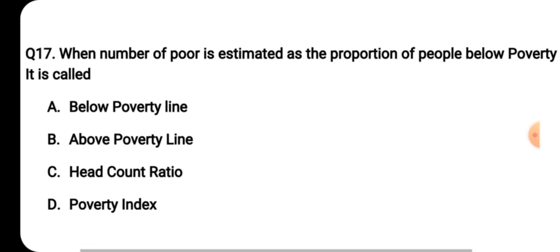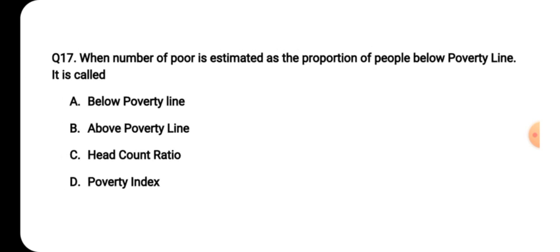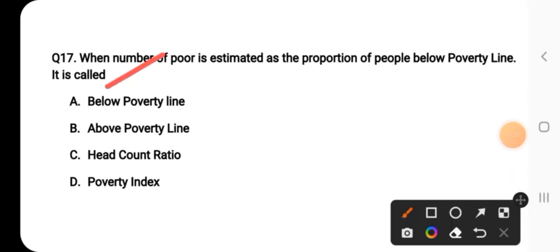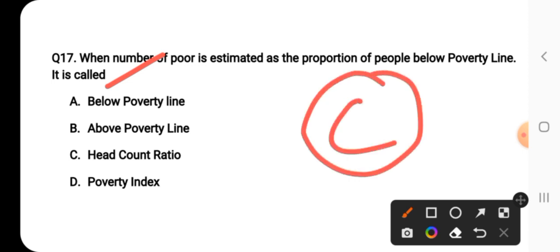Question number seventeen: when the number of poor is estimated as the proportion of people below the poverty line, it is called what? The correct answer is option C — headcount ratio. Headcount ratio is the proportion of the population that exists below the poverty line threshold.